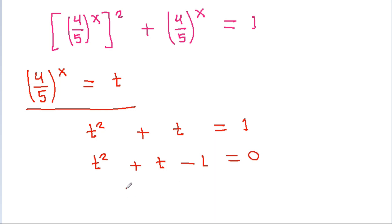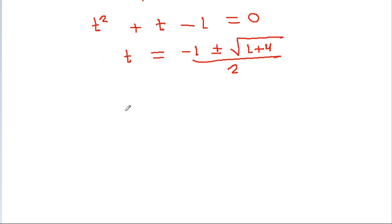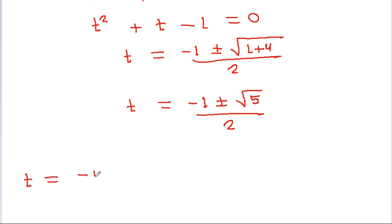And t will be equal to minus 1 plus or minus square root of 1 plus 4, all divided by 2, and t is equal to minus 1 plus or minus square root of 5, all divided by 2.